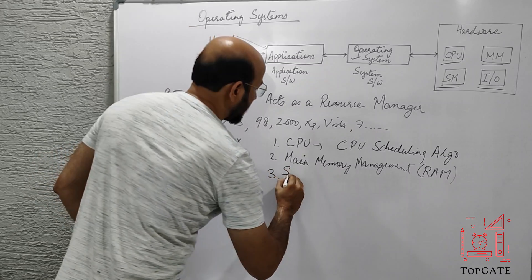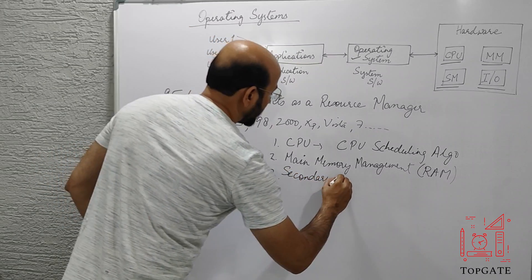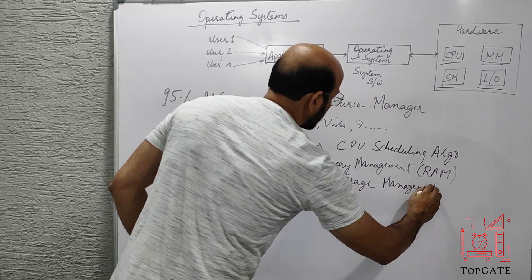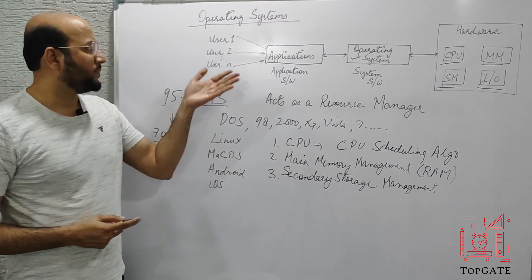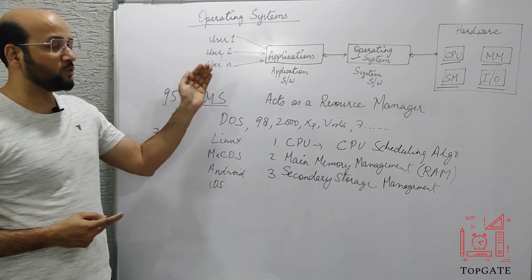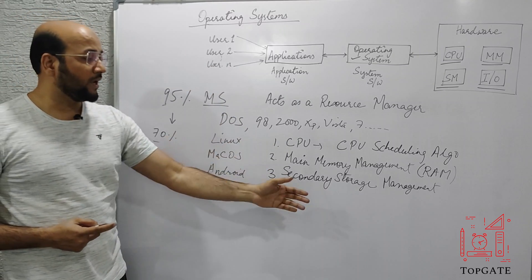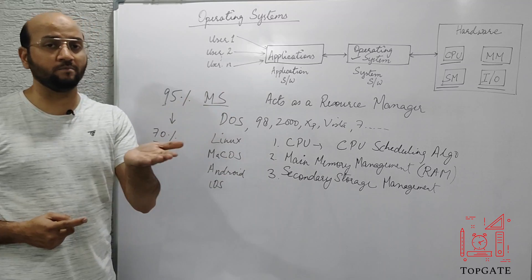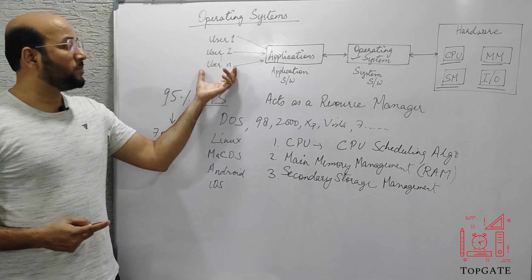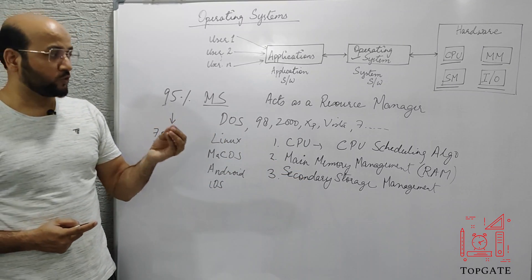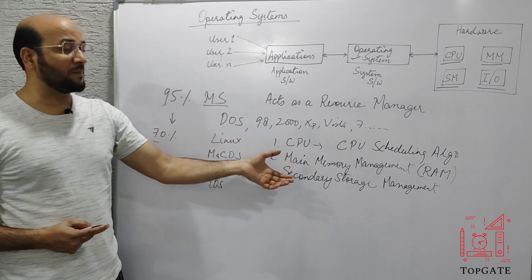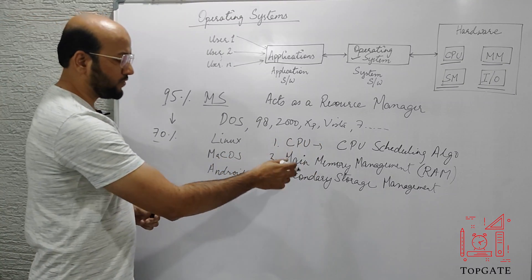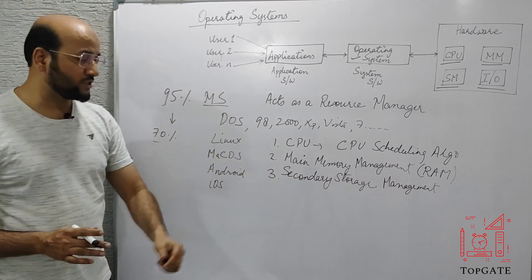The third resource we have is the secondary storage, and the operating system has to manage this secondary storage — it is secondary storage management. Suppose there are N number of users writing programs and these programs are getting saved onto the secondary storage. When the CPU starts executing these programs, they have to be shifted from secondary storage to main memory. The storage should be done in such a way that retrieval becomes easy. It is the responsibility of the operating system to store these programs onto the hard disk in such a way that their retrieval becomes easy.